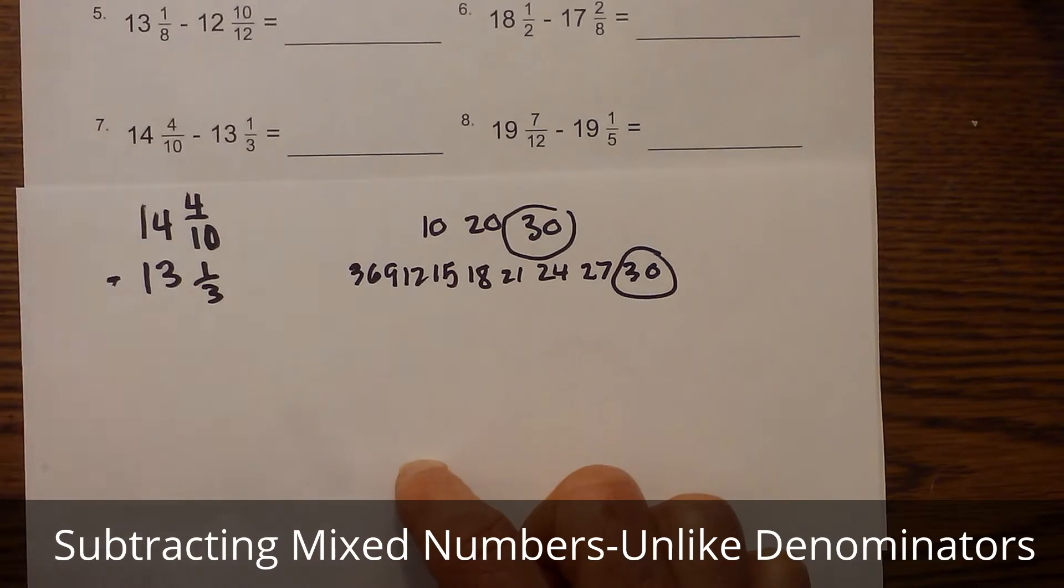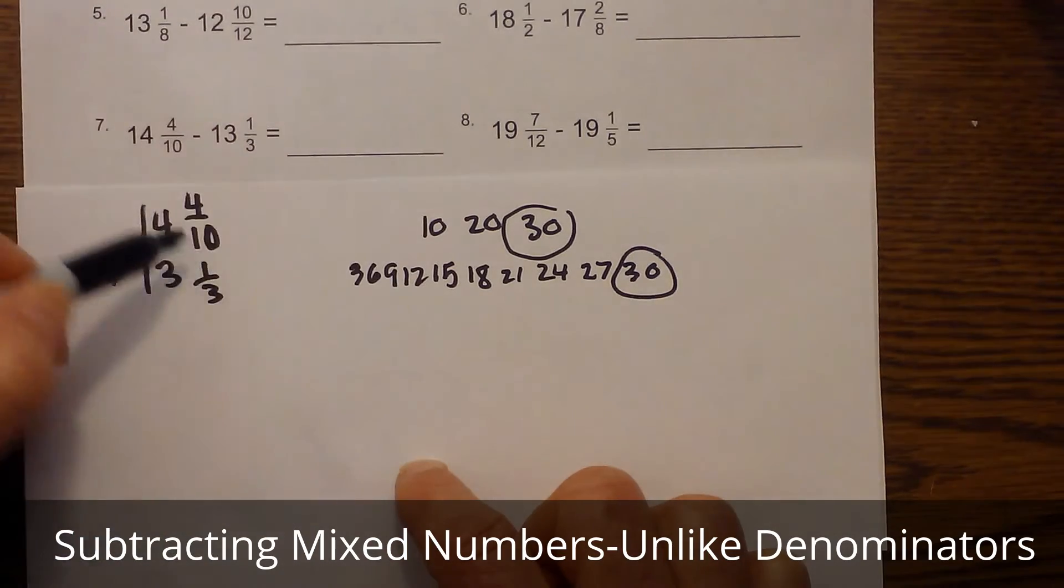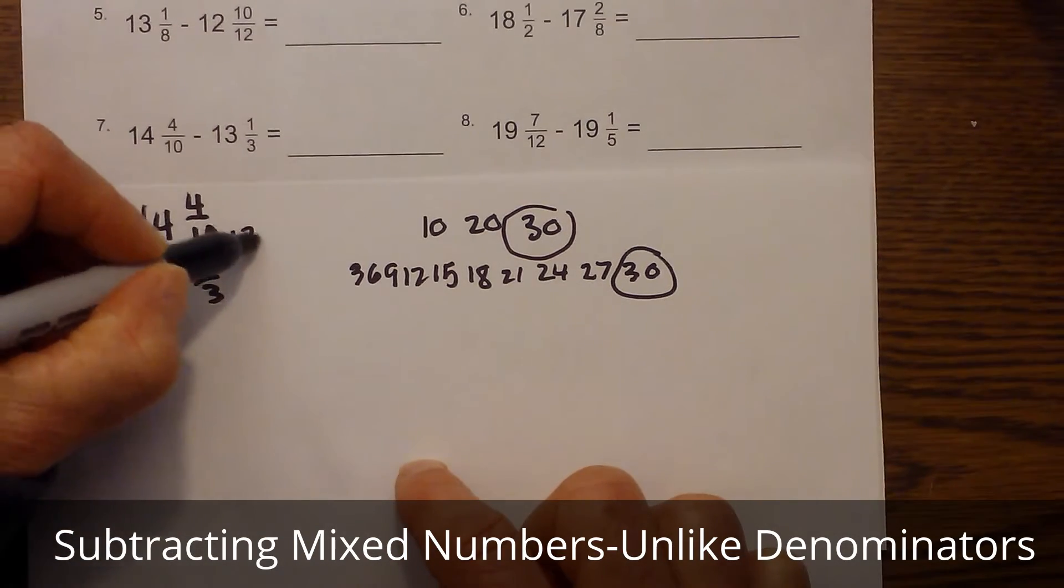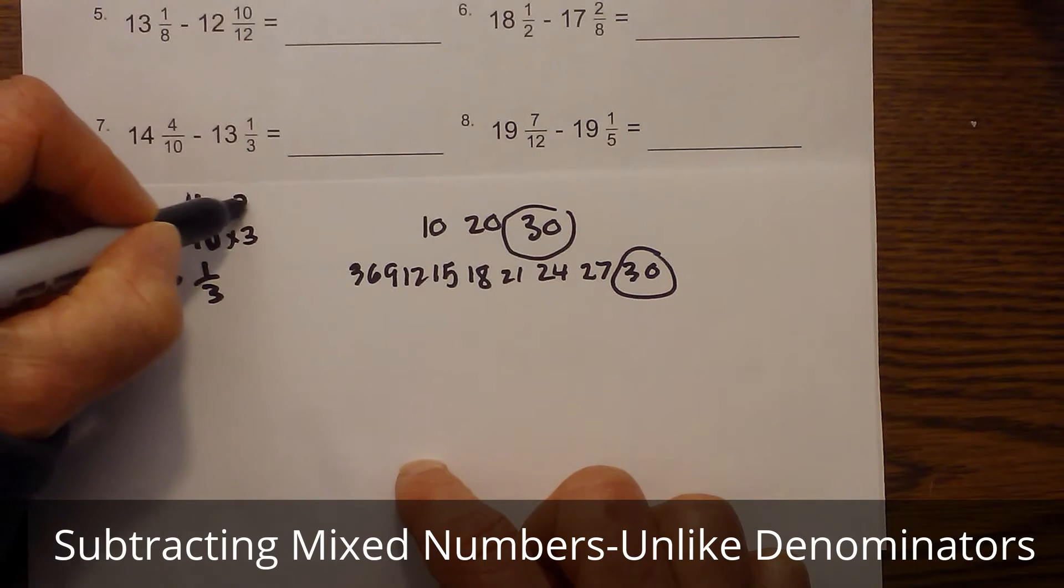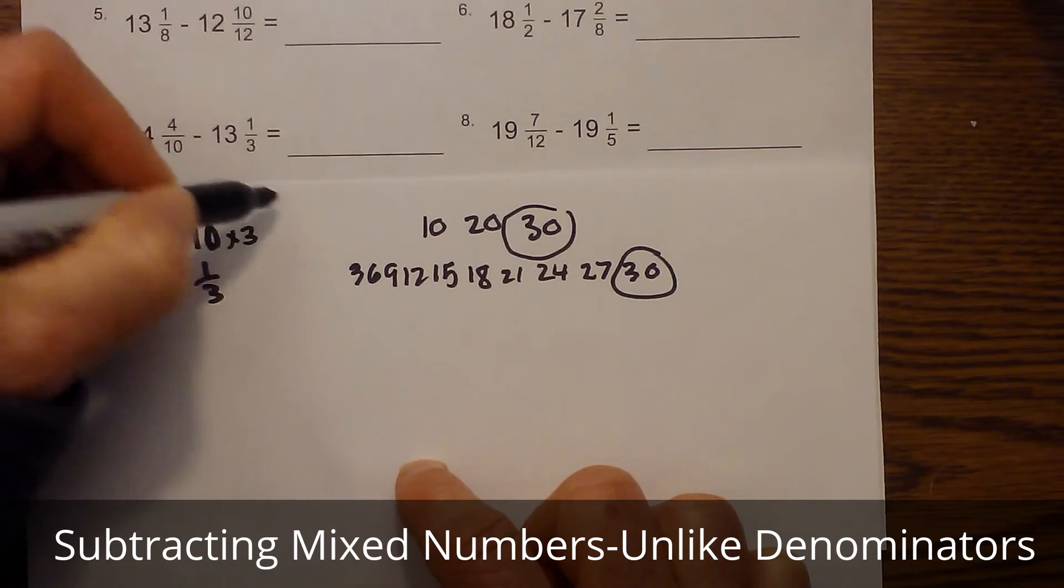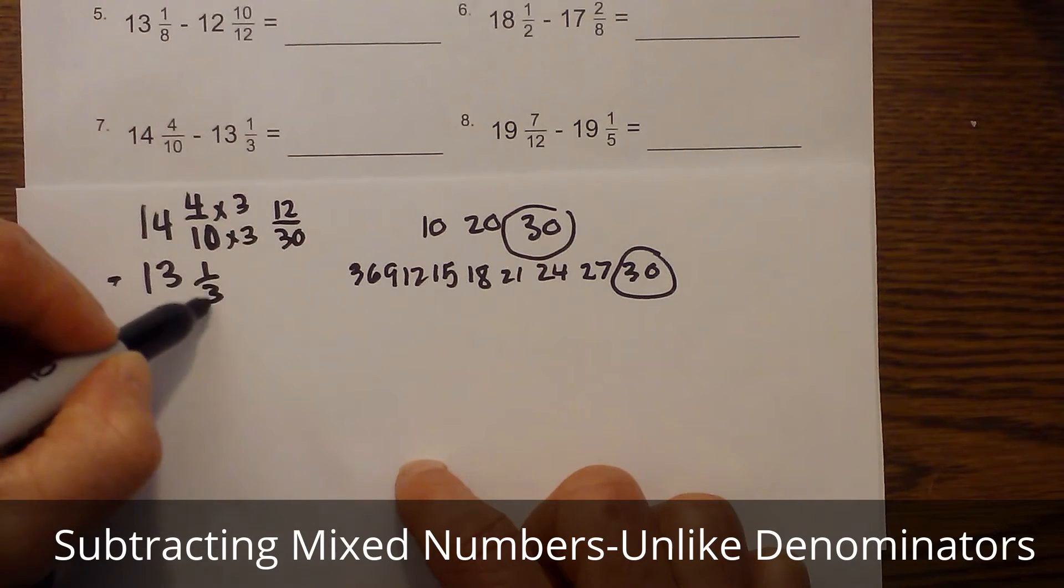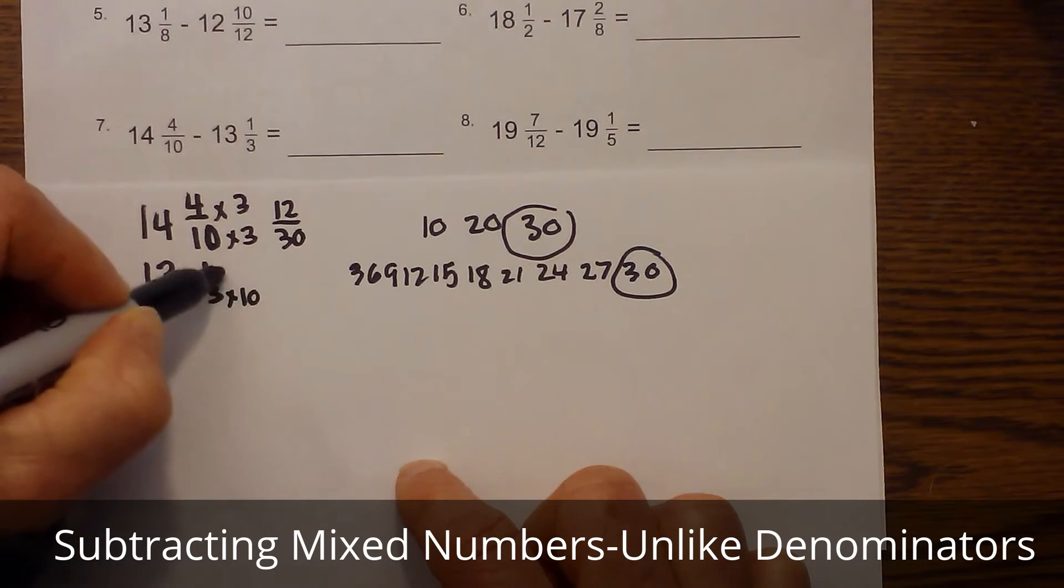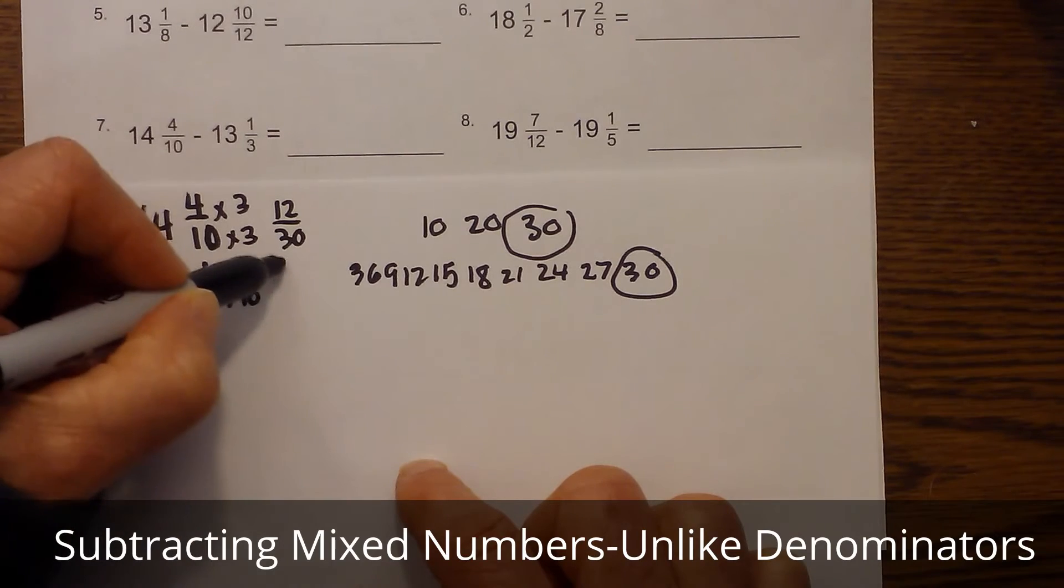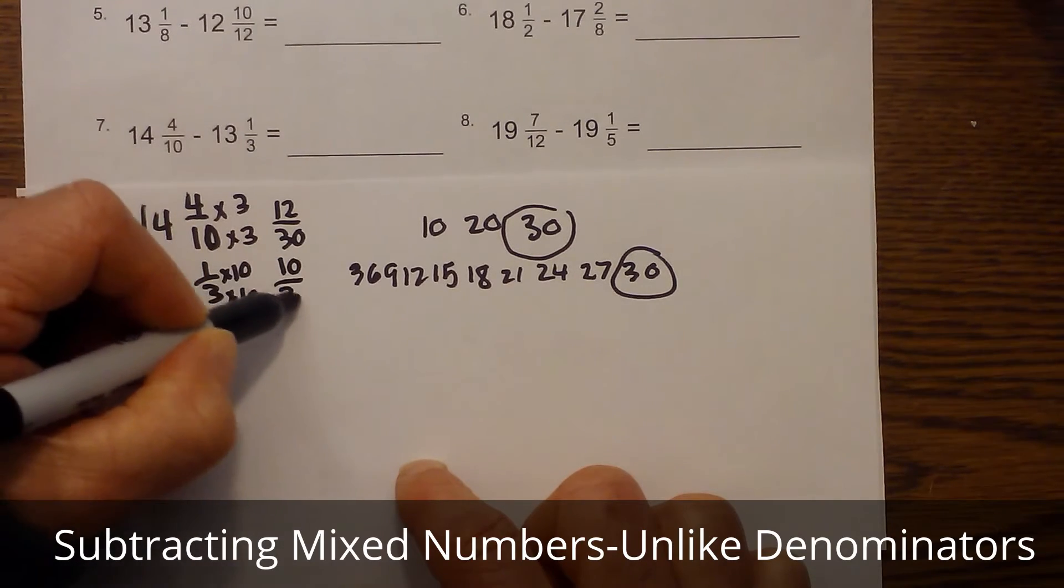Okay, so now ten goes into thirty three times. I'm going to multiply ten times three and four times three, so that becomes twelve thirtieths minus. And three goes into thirty ten times, so I'll multiply both of these by ten, so that would become ten thirtieths.